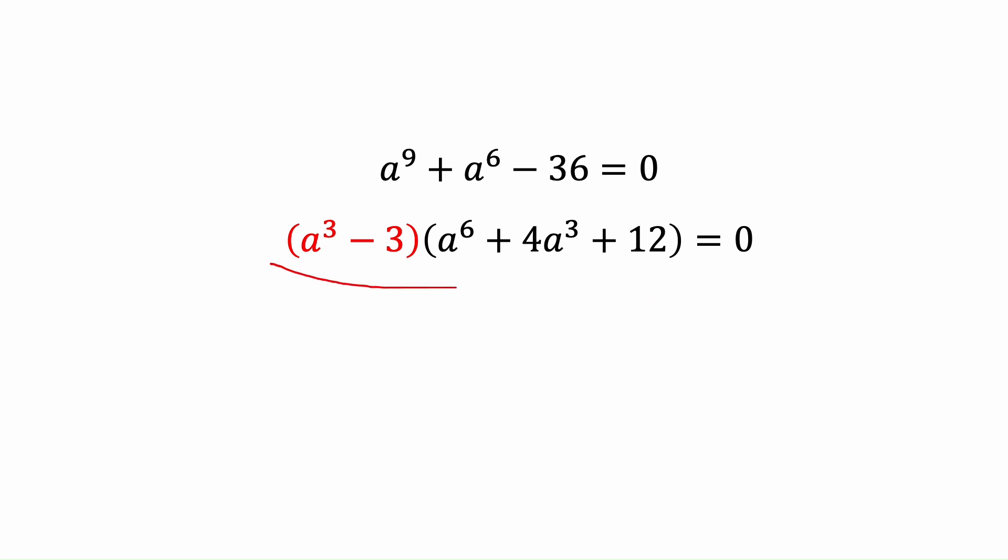So now this is what we found from the last slide: a to the power 3 minus 3. And this is the summation of the other two parentheses. And now we want to make this equation equals to 0. So we have multiplication. Each of the parentheses can be 0. So one of them is the first one and the other one is the second one. And let's see what are our roots here.